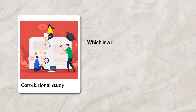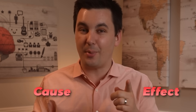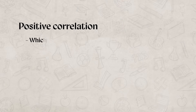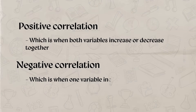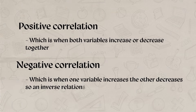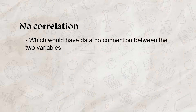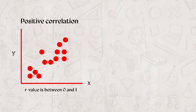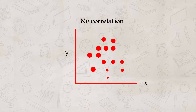A correlational study is a research method that examines the relationship between two variables without manipulating them. This allows researchers to gain insight into the relationship and determine its strength. However, correlational studies do not show cause and effect. With correlation, we can have a positive correlation — when both variables increase or decrease together — a negative correlation, when one variable increases and the other decreases (an inverse relationship), or no correlation, meaning no connection between the two variables. Positive correlations have an R value between zero and one, negative correlations between negative one and zero, and no correlation has an R value of zero.